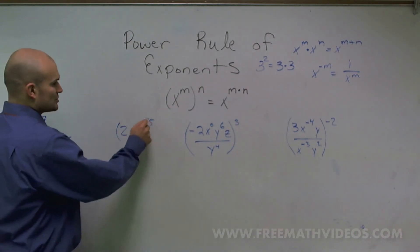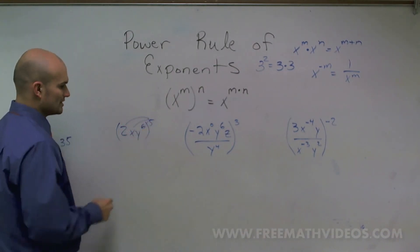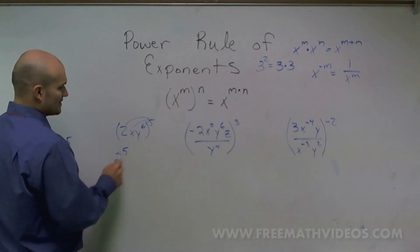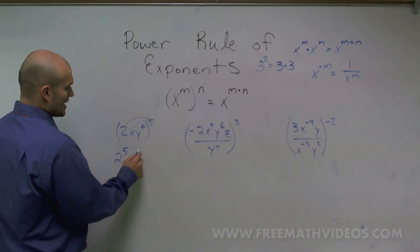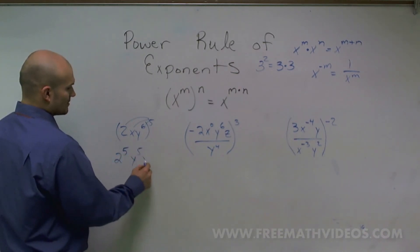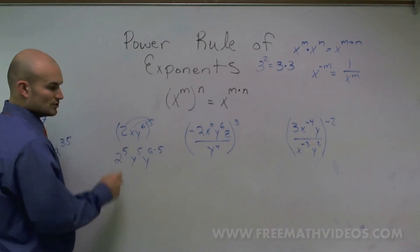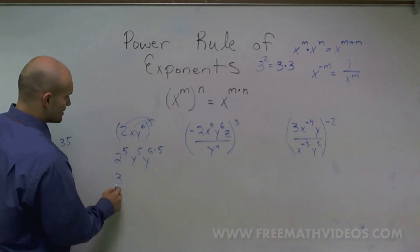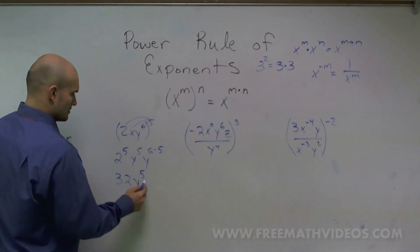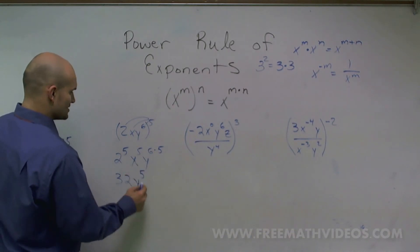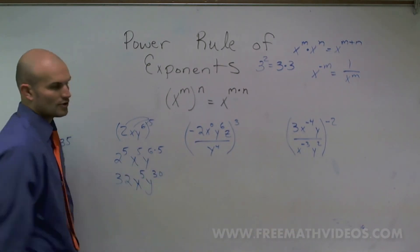Here, I need to distribute my 5 to each one of these terms. So I have 2 to the 5th power, x to the 5th, and y to the 6th times 5. 2 to the 5th power is 32, x to the 5th power, and y to the 30th.